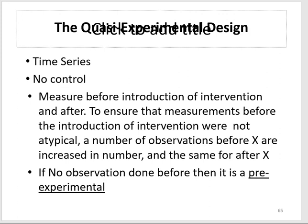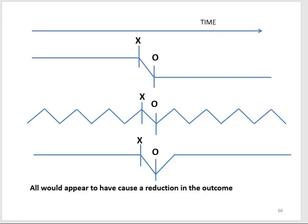For example, if you want to know how much stress pharmacy students experience and your intervention is changing the curriculum, you cannot randomize students into new and old curricula. So you measure stress levels at multiple time points over two or three years before changing the curriculum, then measure stress levels again at multiple points — first year, second year, third year — after the change, to establish a clear picture of what happened before and after.